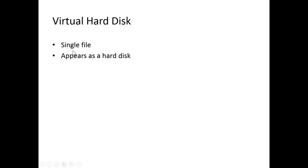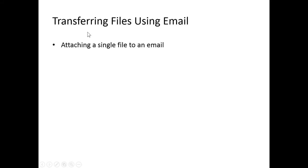Let's start out with a review of virtual hard disks from Windows 7. A virtual hard disk is a single file which appears as a physical hard disk. Let's look at an example of when a virtual hard disk would be useful. One example would be if you are transferring files using email — you could attach a single file to an email. That's easy enough.